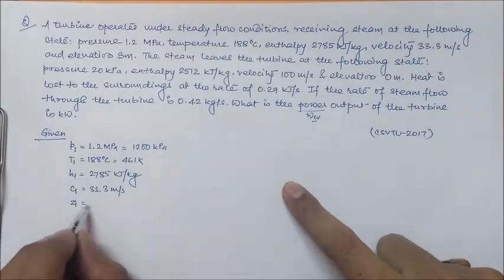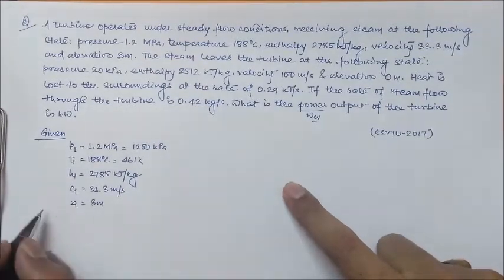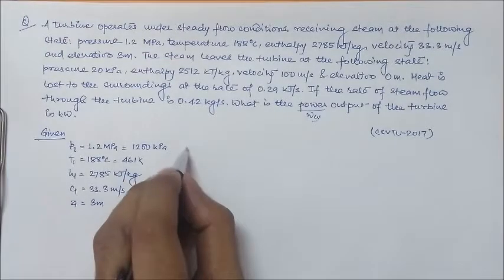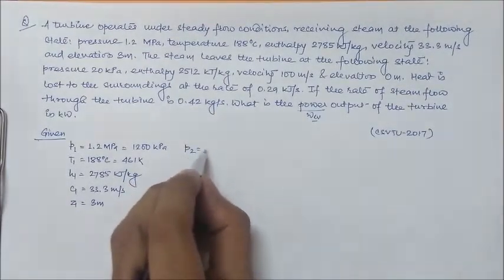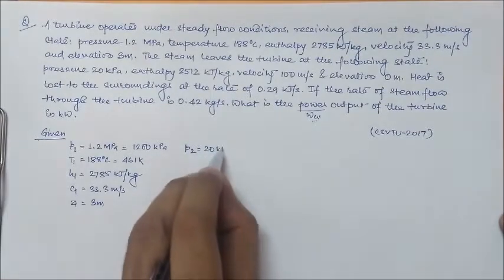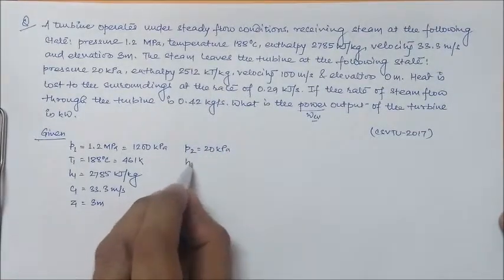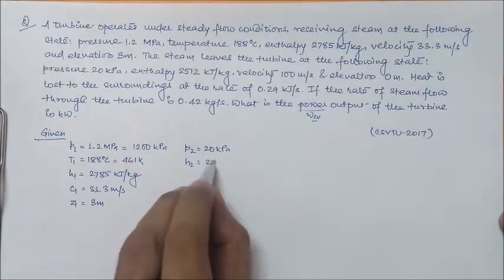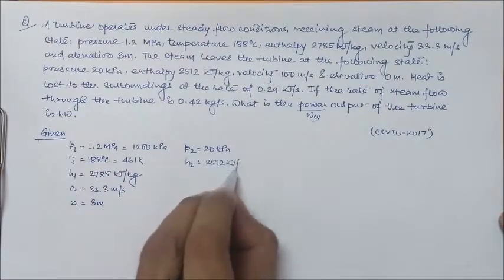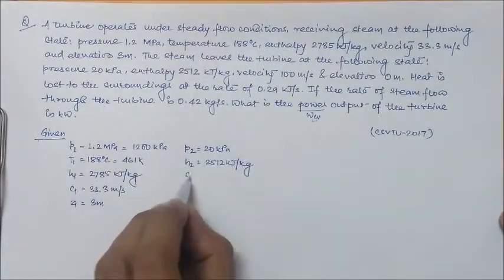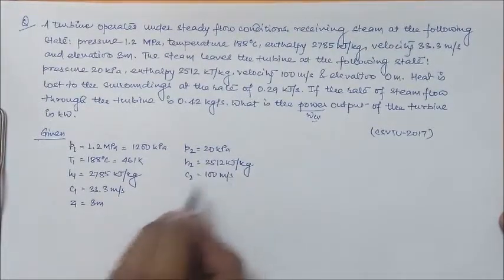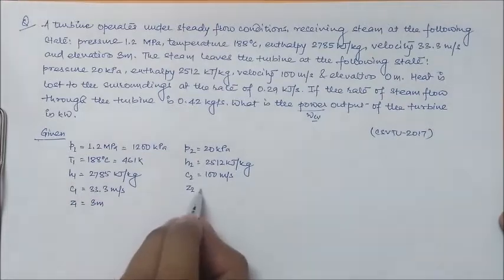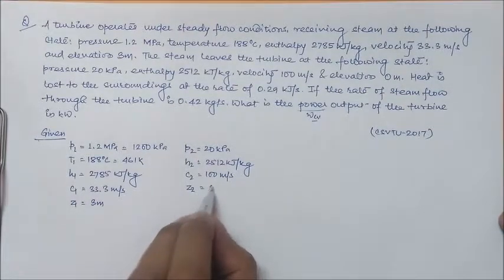Elevation, that is Z1, is 3 meter. At the outlet, P2 is 20 kilopascal, H2 is 2512 kilojoule per kg, velocity is 100 meter per second, and Z2 is 0 meter.